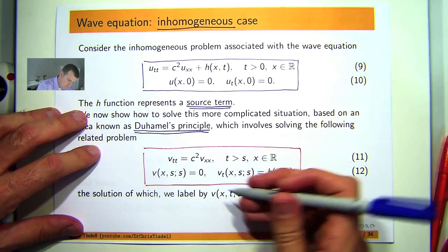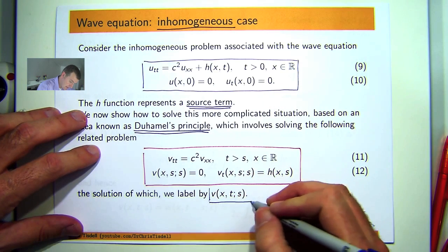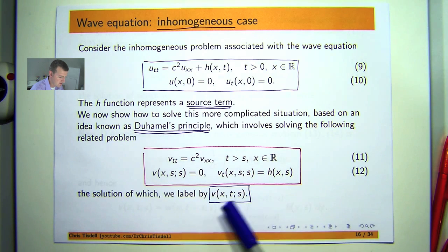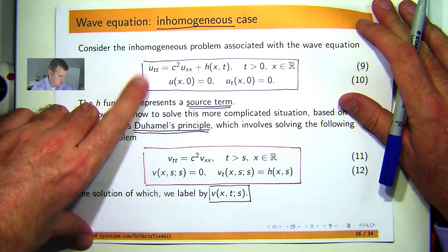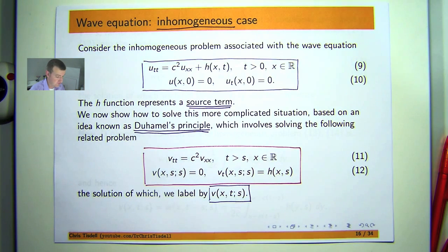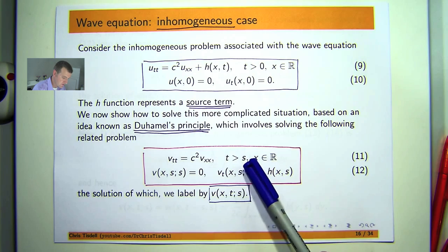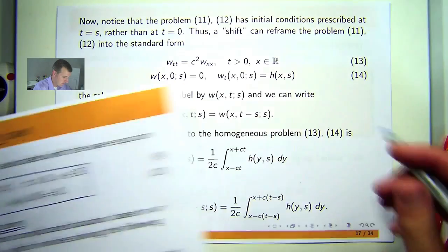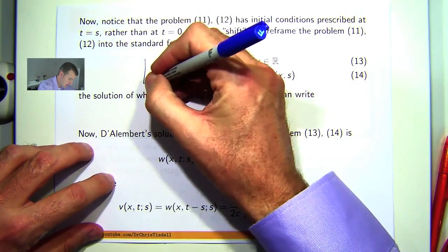So that differs a little bit from nine and ten because we're not starting at zero. So the solution to this problem 11, 12 is going to be denoted by V of X comma T semicolon S. So how does that help us solve this problem? Well, we could solve this problem using D'Alembert's formula because this is a homogeneous wave equation now and I've got some initial conditions. But the only thing that's stopping us really is this T greater than S. So what we're actually going to do is put this back into a standard form.